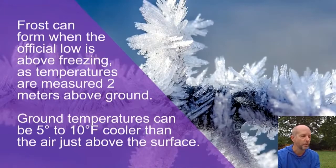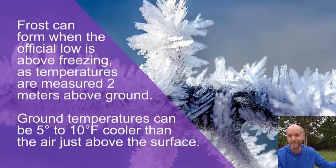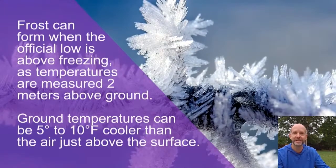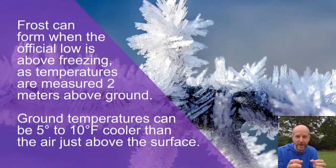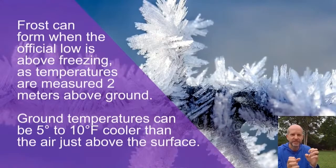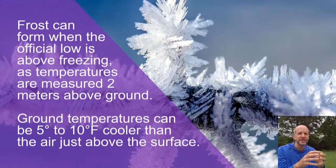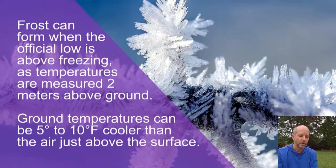Just like on a sunny day when the sun beats down on blacktop, sand at the beach, or the metal on your car and gets way hotter than the air temperature — the reverse can happen at night. When something has a view of the sky it loses what we call longwave radiation. Everything gives off longwave radiation. If you've ever seen an infrared camera, warmer objects appear orange, red, or yellow; cooler objects appear bluish.